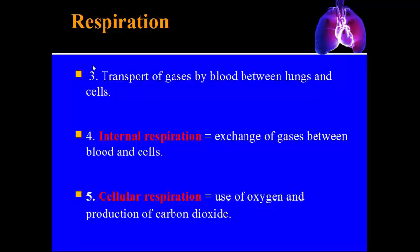After external respiration, gases are transported by the blood from the lungs to the rest of the cells throughout the body. Step four is internal respiration — the exchange of gases between the blood and the cells. Lastly, cellular respiration uses the oxygen you breathe in to help produce energy, forming carbon dioxide as a byproduct.